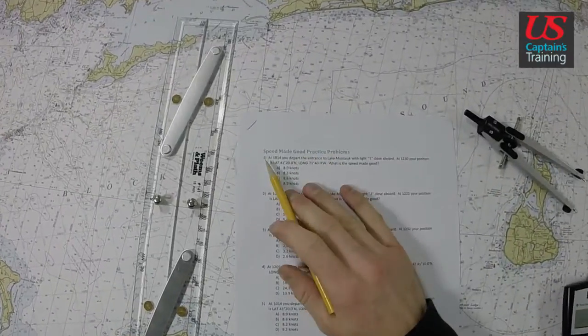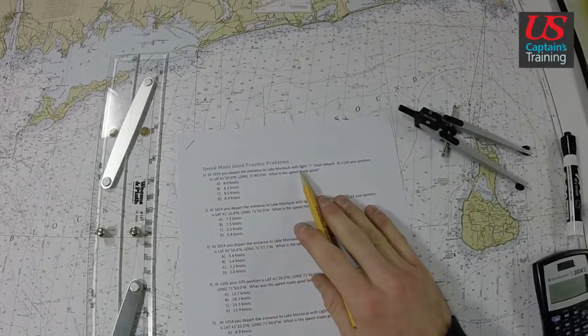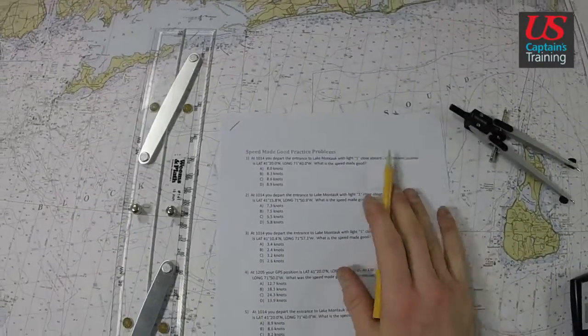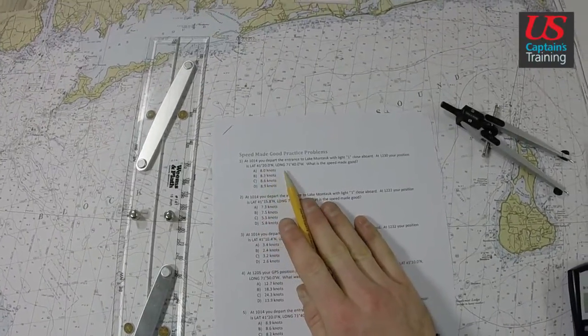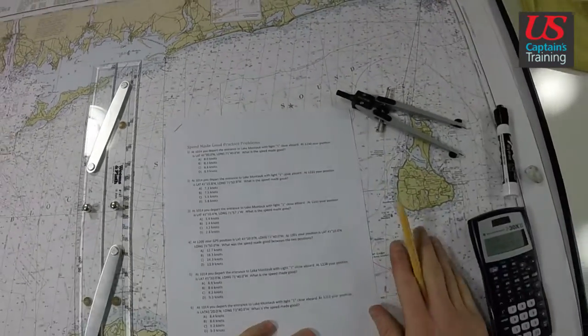Speed made good practice problem one reads: at 1014 you depart the entrance to Lake Montauk with light one close aboard. At 1230 your position is latitude 41°20' longitude 71°40'. What was the speed made good?